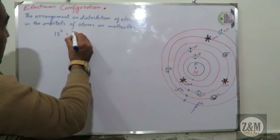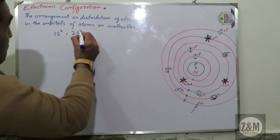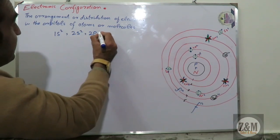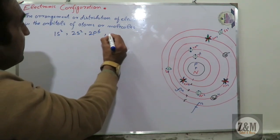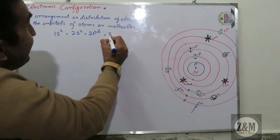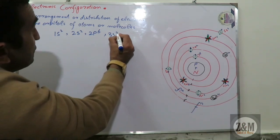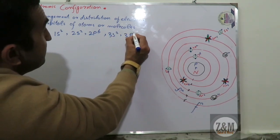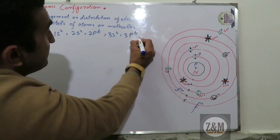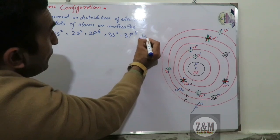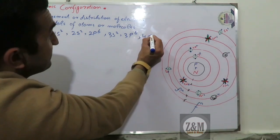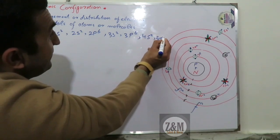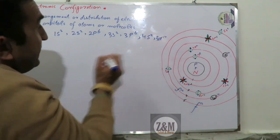For example: 1s², 2s², 2p⁶, 3s², 3p⁶, 4s², 3d¹⁰.